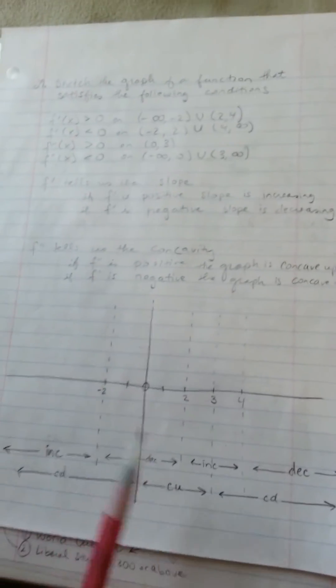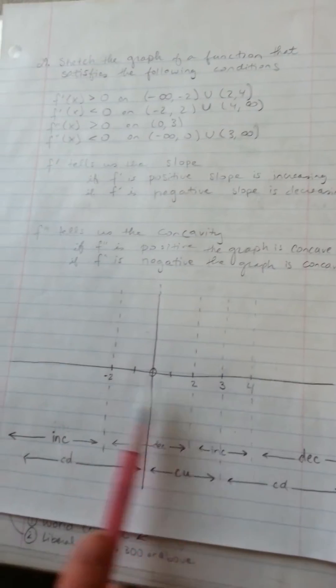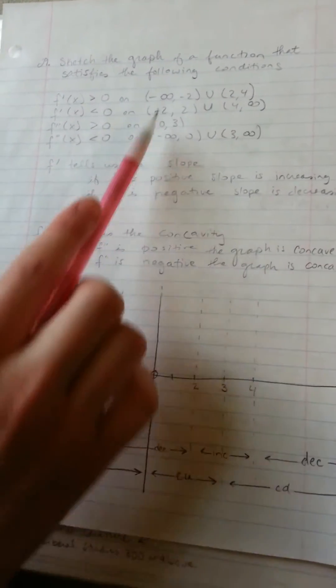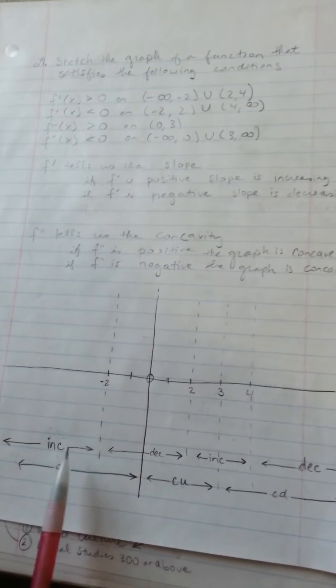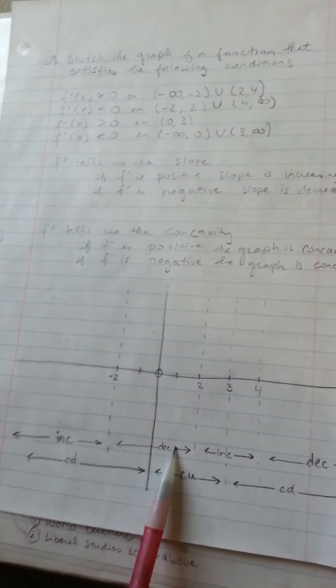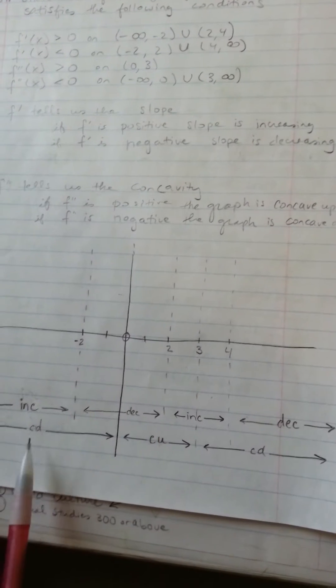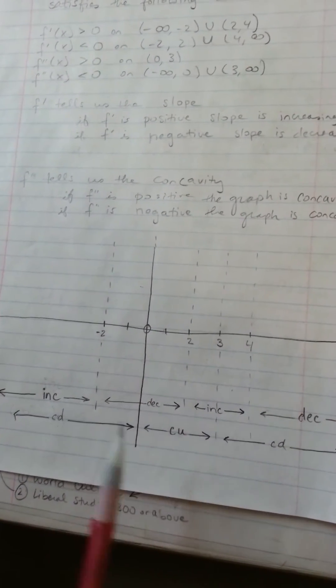So when I'm solving one of these problems, I like to just sketch out a graph with all the points that are mentioned in our conditions above. And then I like to draw in each category if it's going to be either increasing or decreasing, and concave down or concave up.